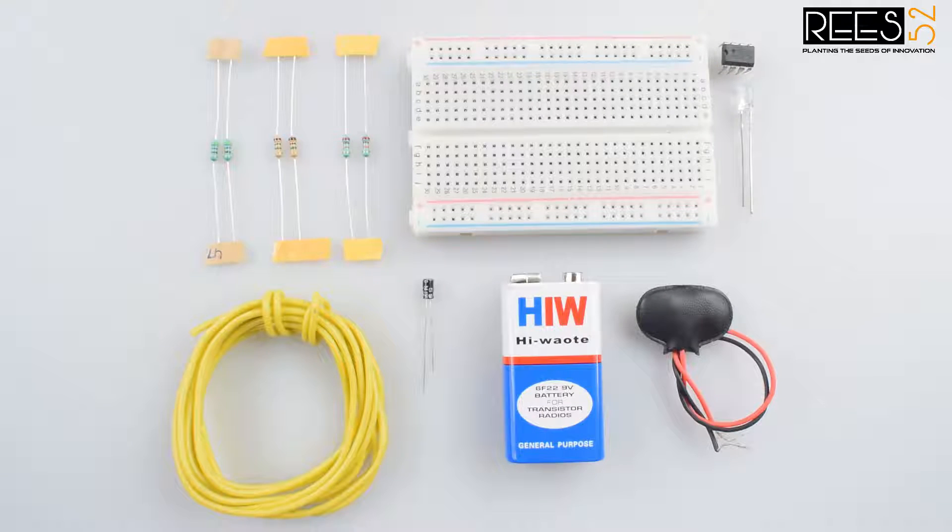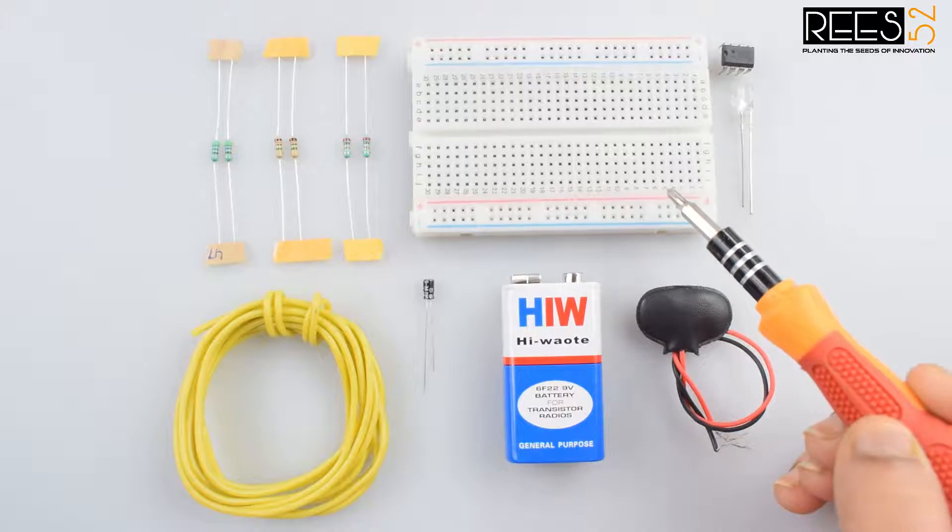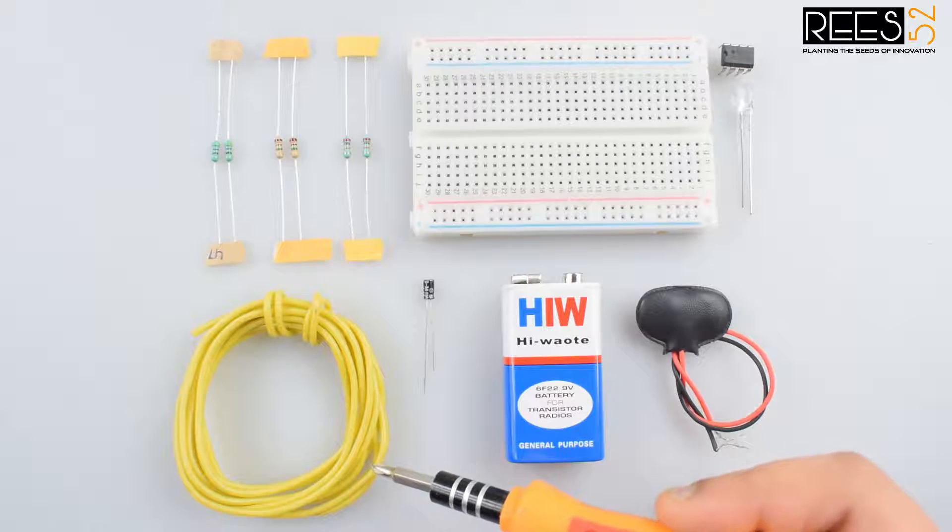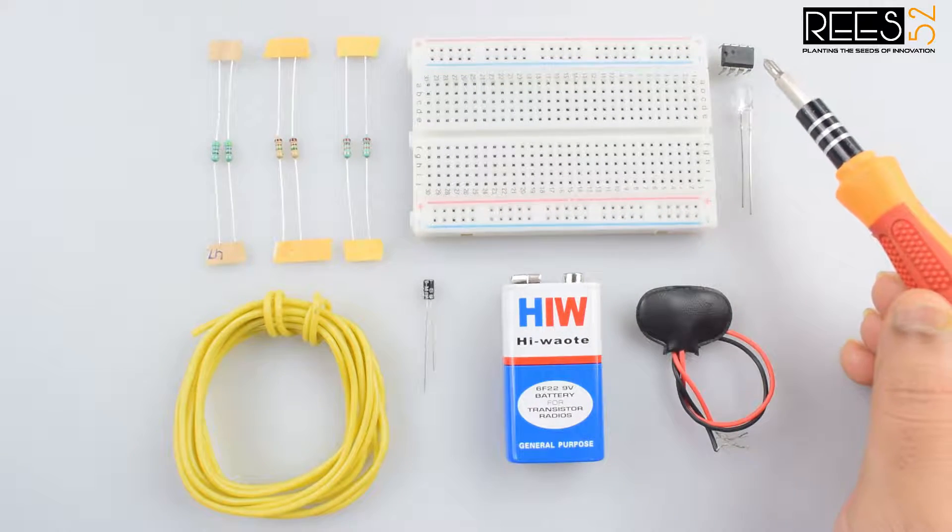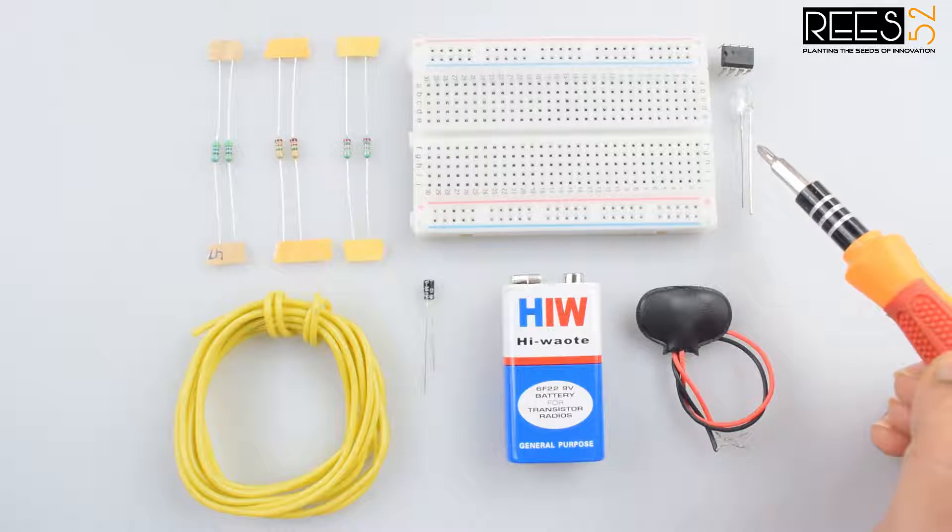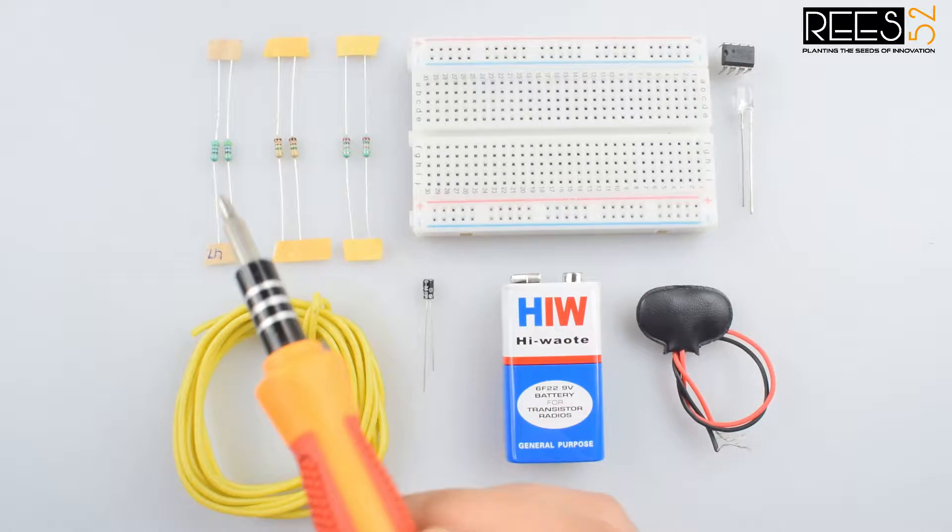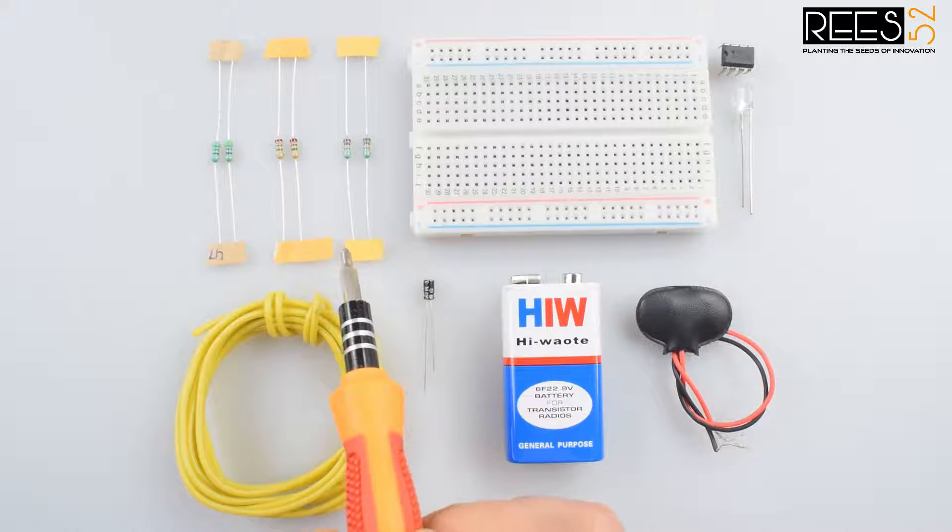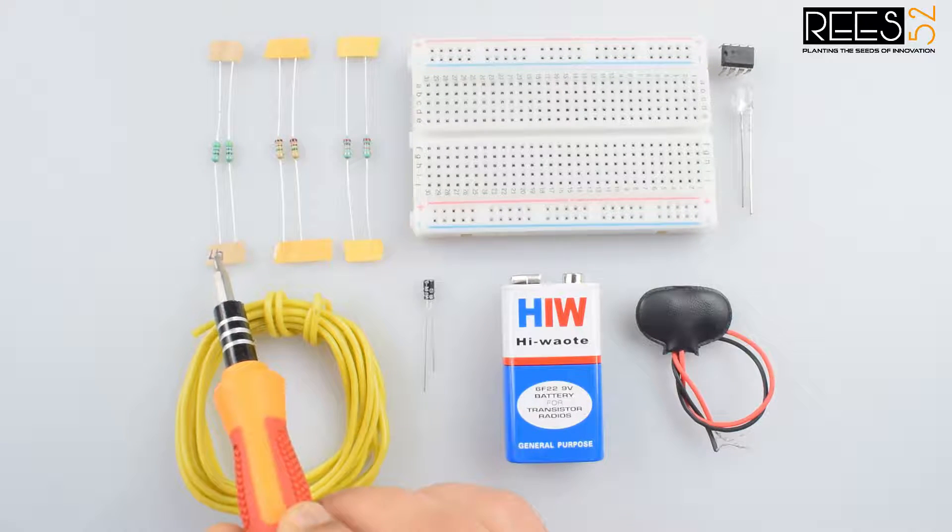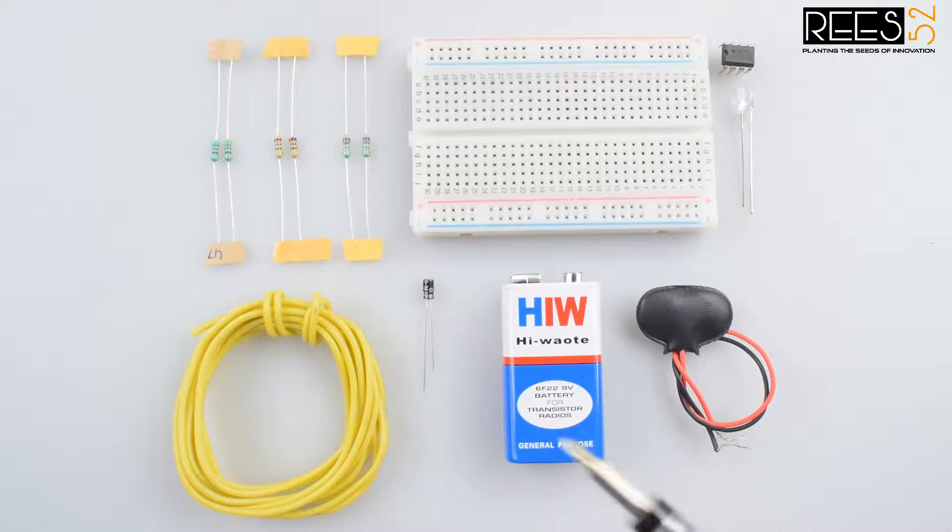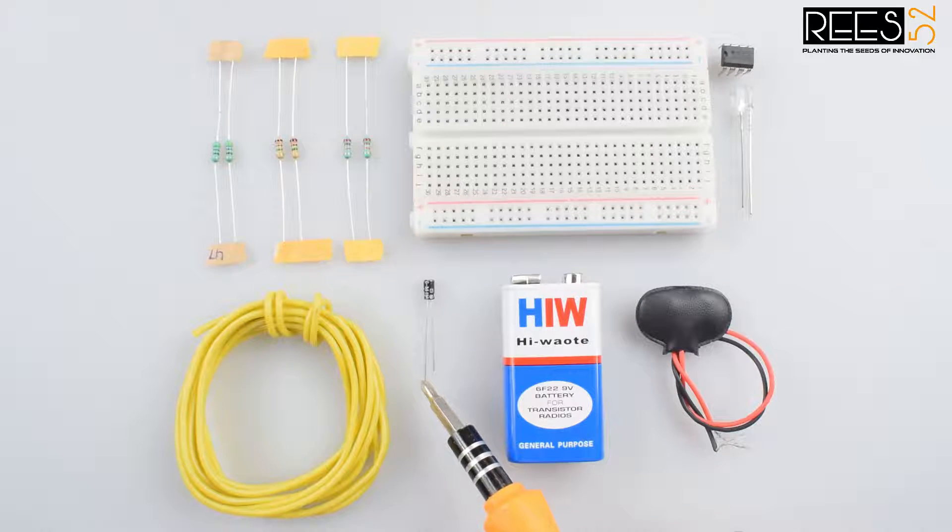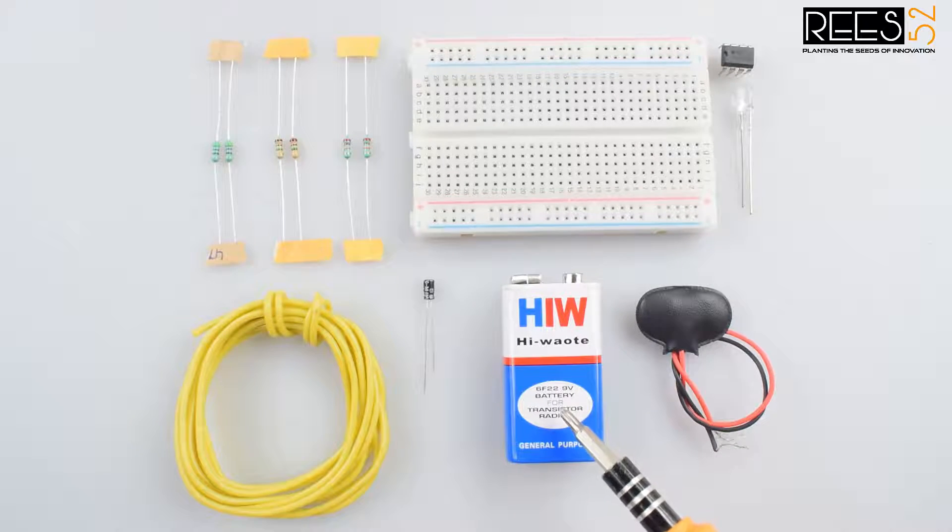So let's gather the required stuff. We will need a breadboard, hookup wires or jumper wires, an NE555 timer IC, an LED, a 22 kilohm resistor, a 470 ohm resistor, a 1 megaohm resistor, a 4.7 microfarad capacitor, and a 9 volt battery with snapper.